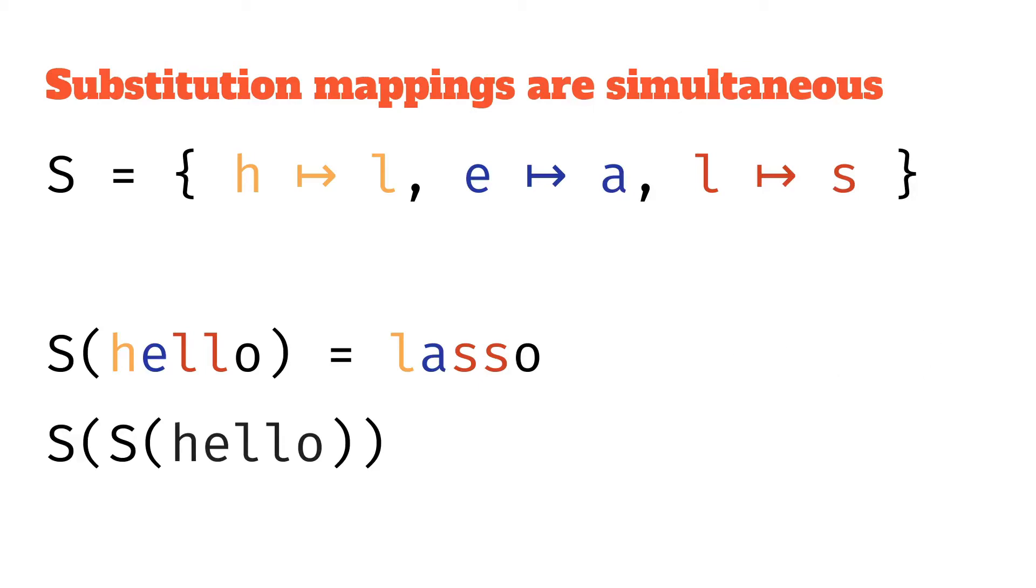So actually, if we apply the substitution again to this, we are going to get a substitution basically applied to lasso because we're just passing it in as an argument again, and we'll get sasso where this L is now converted over.